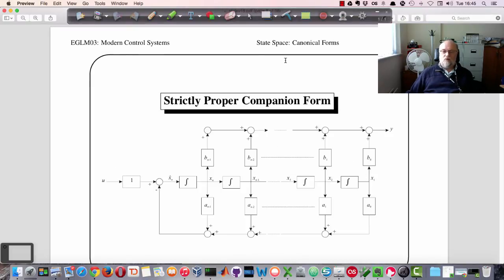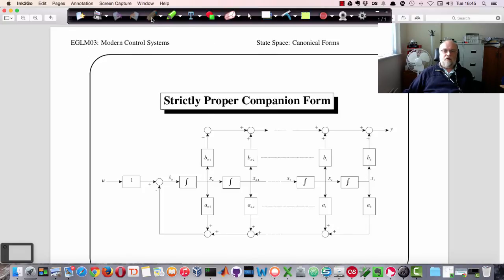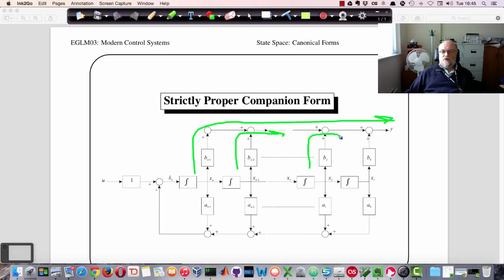And essentially what happens is we get takeoff points now from the states feeding through to the output in this sort of way. And where these b coefficients, which are the original coefficients of the numerator of the polynomial, those come in like that. And I'll show you, I'll prove this to you in the class.